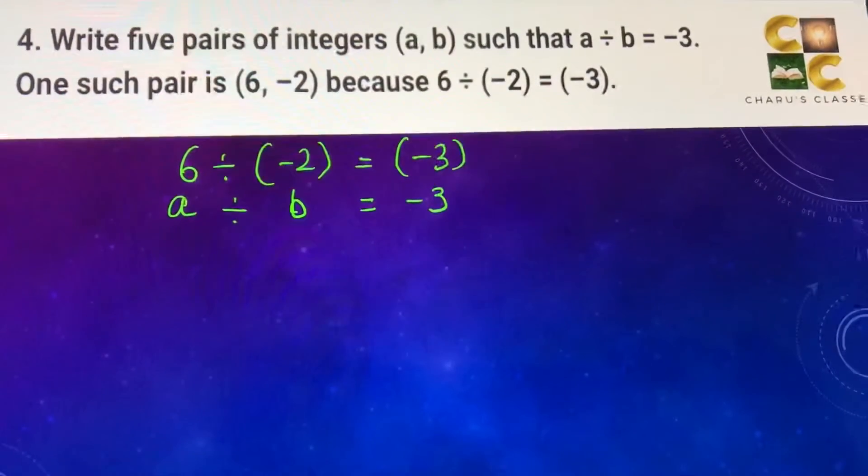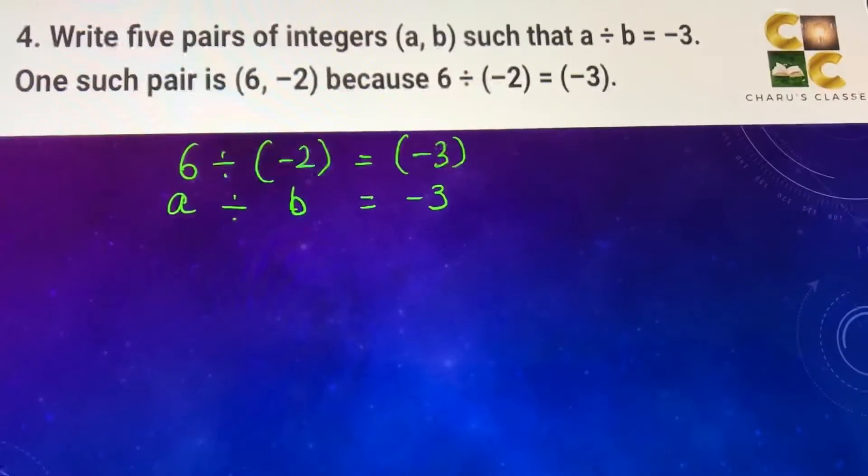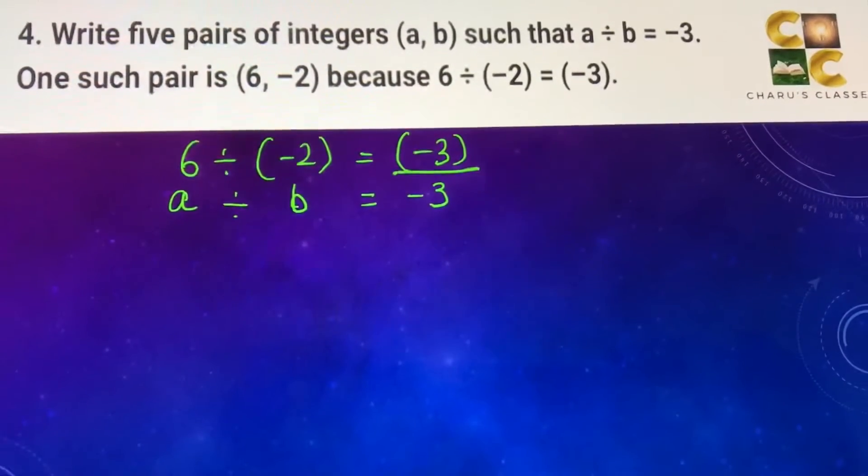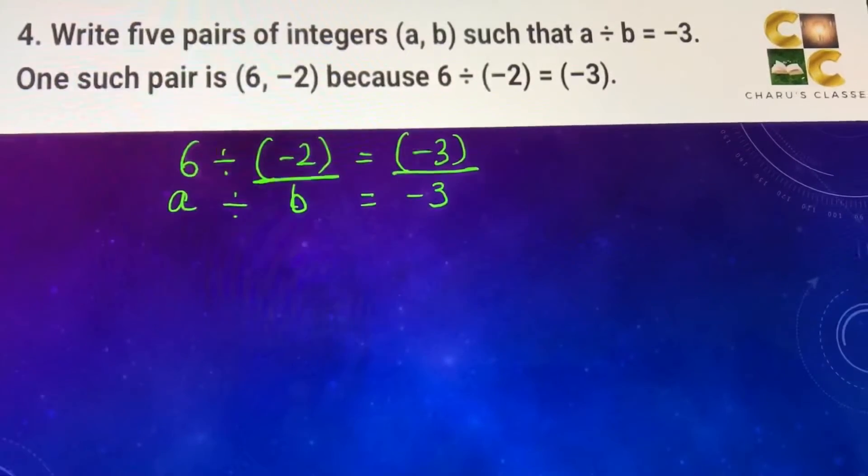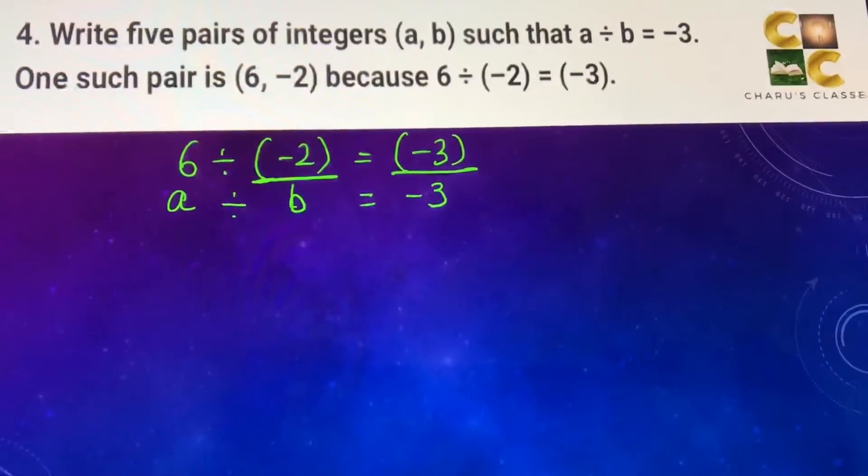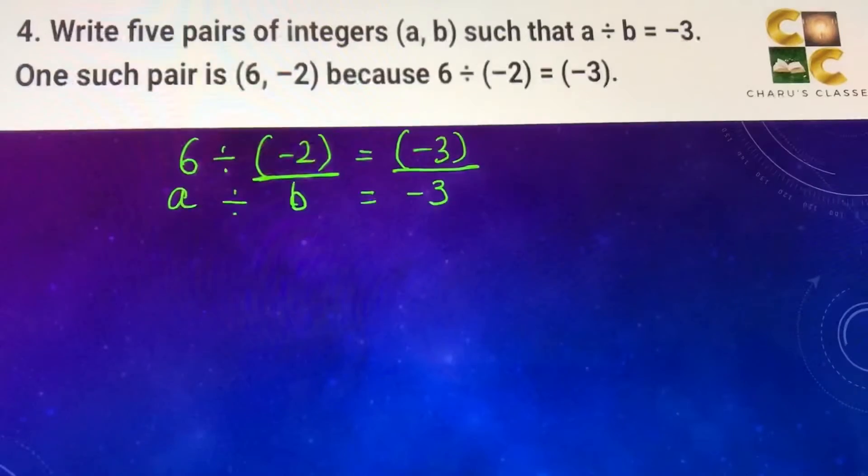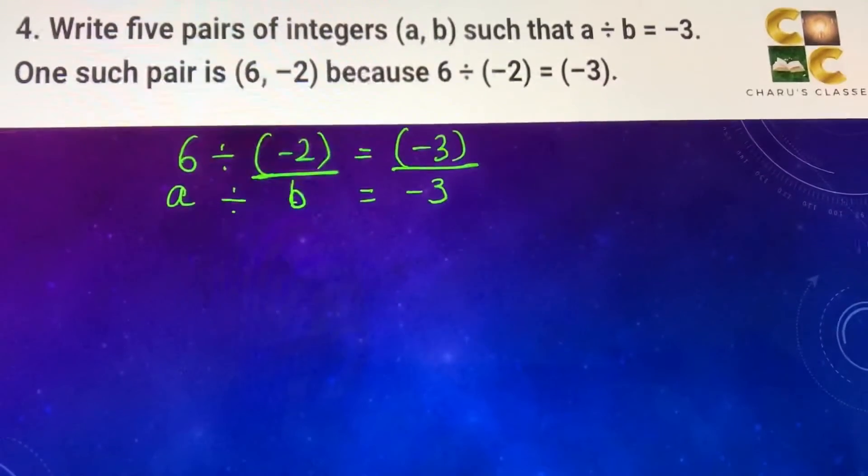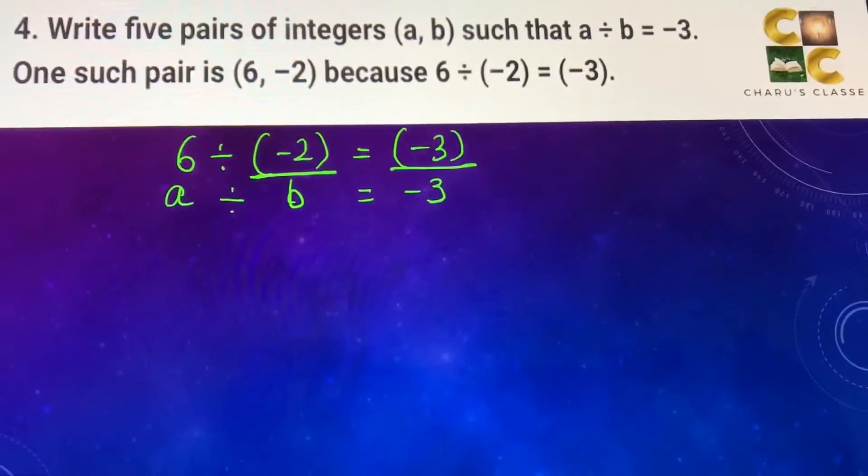So if the answer is minus 3, we have to look for multiples of minus 3. Minus 3 into minus 2 is 6. So what we can do is take multiples of 3 and write it in a.